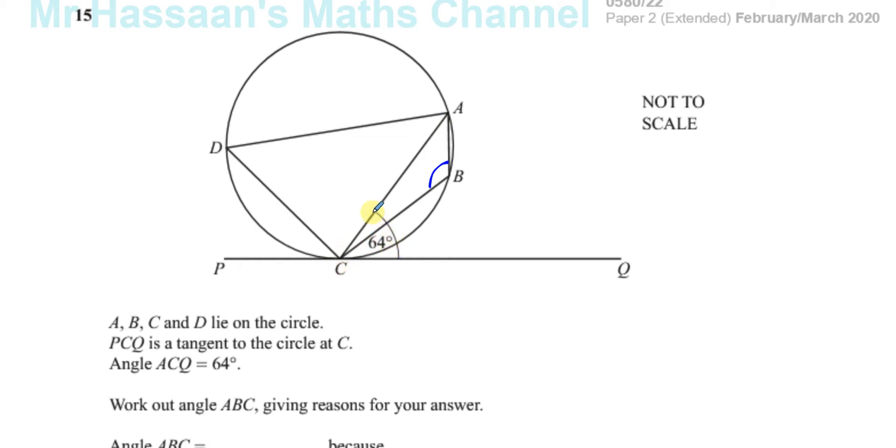Where an angle that stands on a chord, for example, ADC. The angle ADC is subtended by the chord AC. It stands on the chord. Okay, is equal to the angle made between the tangent to the circle and that chord at the point where the tangent touches the circle. So AC is a chord. PCQ is a tangent. The angle between the tangent and the chord is equal to the angle standing on that same chord but on the opposite side of the circle. So this angle is going to be 64 degrees.